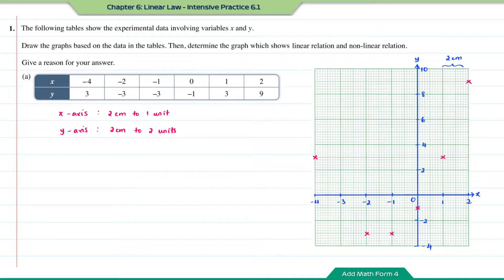Now let us connect all the points that we plotted. The shape of graph a is a curve and not a straight line, therefore the graph in question a shows a non-linear relation.